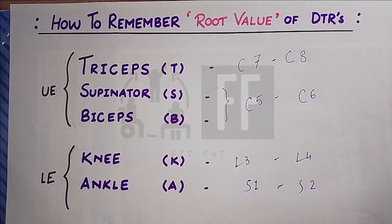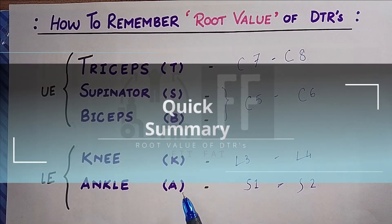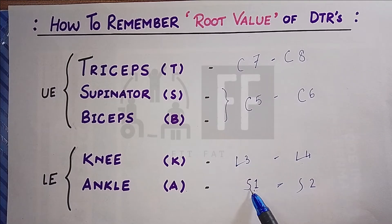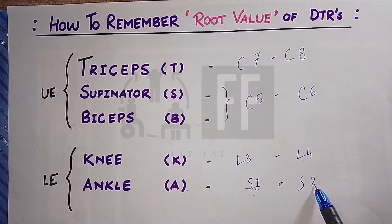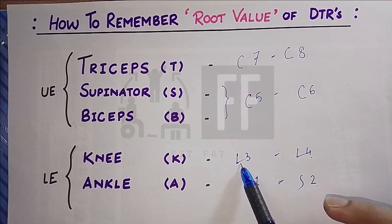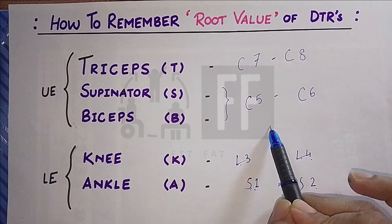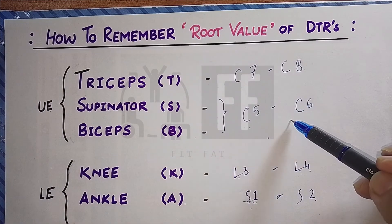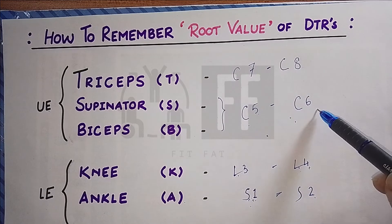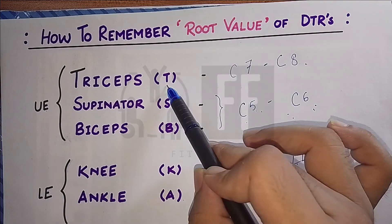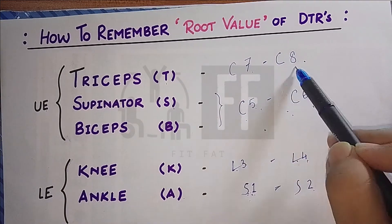Here are all the root values for the major deep tendon reflexes — and now you will never forget them. To summarize: start from the ankle and put the lowest available spinal segment, which is sacrum, giving ankle S1 and S2. After 2 comes 3 and 4, and after sacrum is lumbar, so knee is L3 and L4. There is no DTR for thoracic. For the upper extremities we have only the cervical segment, so after 4 comes 5, 6, 7, and 8 — biceps and supinator are C5 and C6, and triceps are C7 and C8.